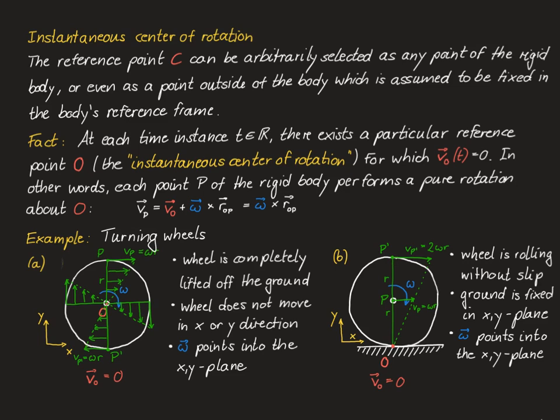Using the same approach, we take any point of the rigid body — for instance the center p of the wheel — and obtain a velocity vector pointing to the right with magnitude omega times r. At point p-prime at the top of the wheel, the velocity also points right with magnitude 2·omega·r. Any point along the vertical line has a rightward velocity proportional to its distance from the instantaneous center of rotation.